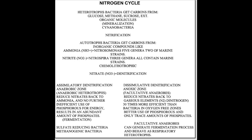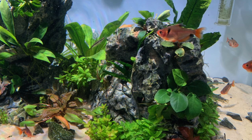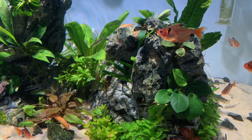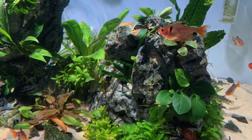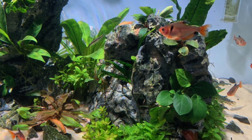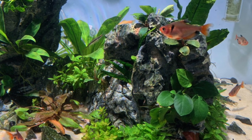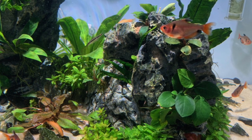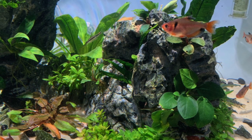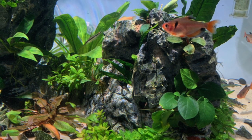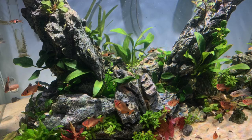We know that Nitrosomonas europaea is the bacteria that will break down ammonia into nitrites. We also know that Nitrobacter winogradskyi will then break down nitrites into nitrates. When you have this end byproduct, people think that plants are going to use it all up, and that is the way it's always been told to us.